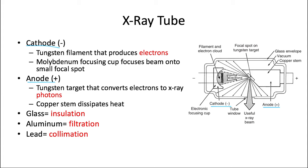So the cathode consists of the tungsten filament that produces the electrons, and so the filament is heated up by the circuitry and electrons literally boil off by thermionic emission. There's also a molybdenum focusing cup, which helps to focus electrons onto the target into a small focal spot.